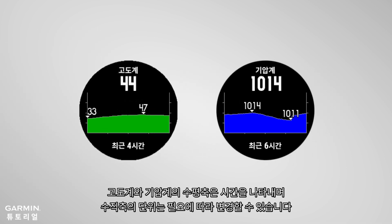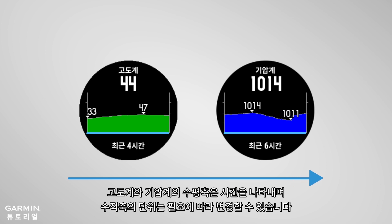The horizontal axis of the altimeter and barometer widgets represents time, and the unit of the vertical axis can be switched according to your needs.